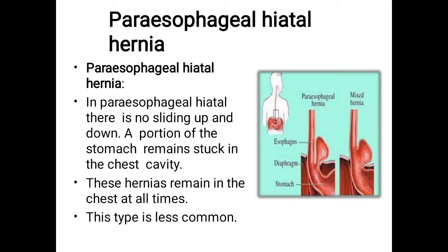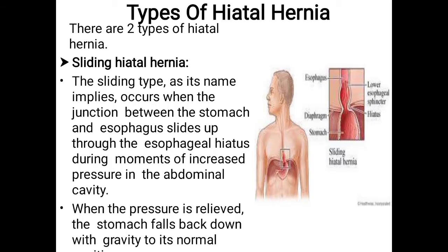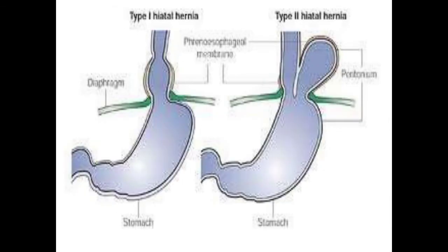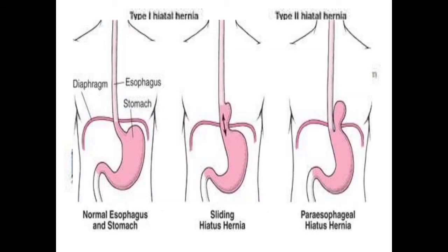So to summarize the difference: in sliding hiatal hernia the stomach slides up and falls back down, whereas in paraesophageal hernia the stomach is stuck in the chest cavity and does not slide. Let's see the picture — here is type 1 (sliding hiatal hernia) and type 2 (paraesophageal hiatal hernia) showing the stomach, diaphragm, and the hernia. The images give you a clear comparison between normal, sliding, and paraesophageal hernia.